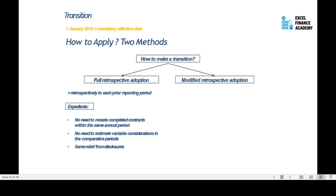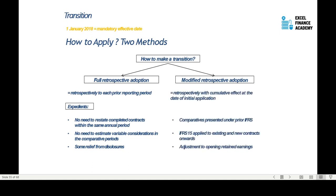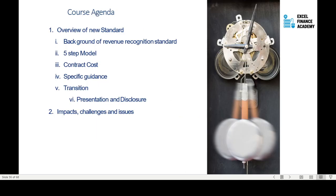Under full retrospection, you don't need to estimate variable consideration in comparative periods, and there is certain relief from disclosure. Under modified retrospective adoption, you apply the standard retrospectively with the cumulative effect on the date of initial application, preparing comparatives under prior IFRS. It applies only to existing and new contracts, not completed ones, and you need to adjust the opening retained earnings.